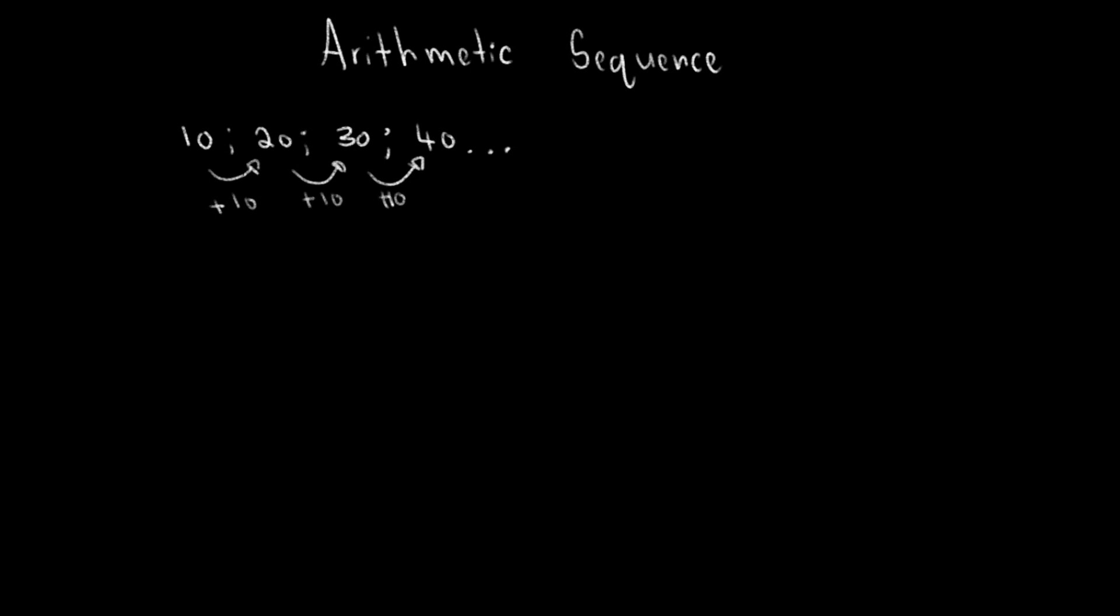This will continue up until infinity. So the first formula we need to know is a_n = a_1 + (n-1)d. This d is known as the common difference.